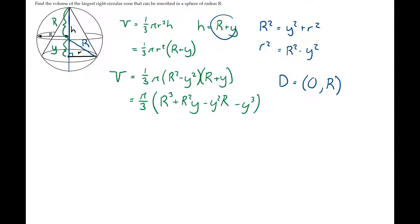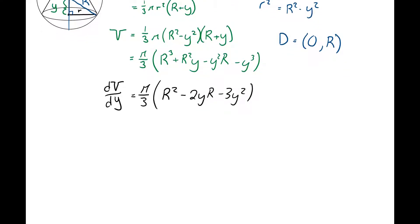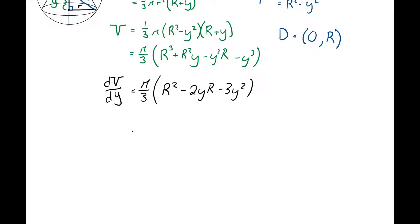Okay, so to take the derivative, dV dy, derivative with respect to y, we'll keep the pi over 3 out there. R to the third, that is a constant, so that goes to zero. R squared y goes to R squared, R squared y squared R means 2yR and then minus 3y squared. Now, I need to find the critical numbers of this, so it's going to set equal to zero.